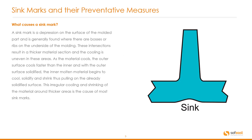Let's start with sink marks. You can see an image on the right hand side here depicting what a sink mark looks like. A sink mark is a depression on the surface of the molded part and is generally found where there are bosses or ribs on the underside of the molding. These intersections result in a thicker material section and the cooling is uneven in these areas. As the material cools, the outer surface cools faster than the inner, and with the outer surface solidified, the inner molten material begins to cool, solidifying and shrinking, thus pulling on the already solidified surface. This irregular cooling and shrinking of the material around the thicker areas is the cause of most sink marks.